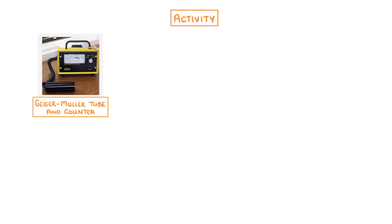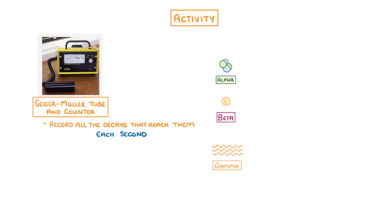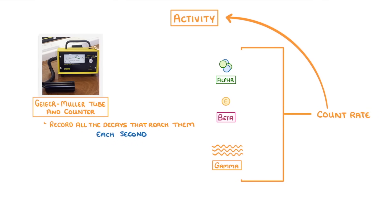So far we've just assumed that we'd know what the activity is. In real life though, we'd have to find the activity using a device called a Geiger-Muller tube and counter. These record all the decays that reach them each second — all of those alpha and beta particles and gamma rays — which they then record as the count rate. And it's this count rate that we use to estimate the activity.